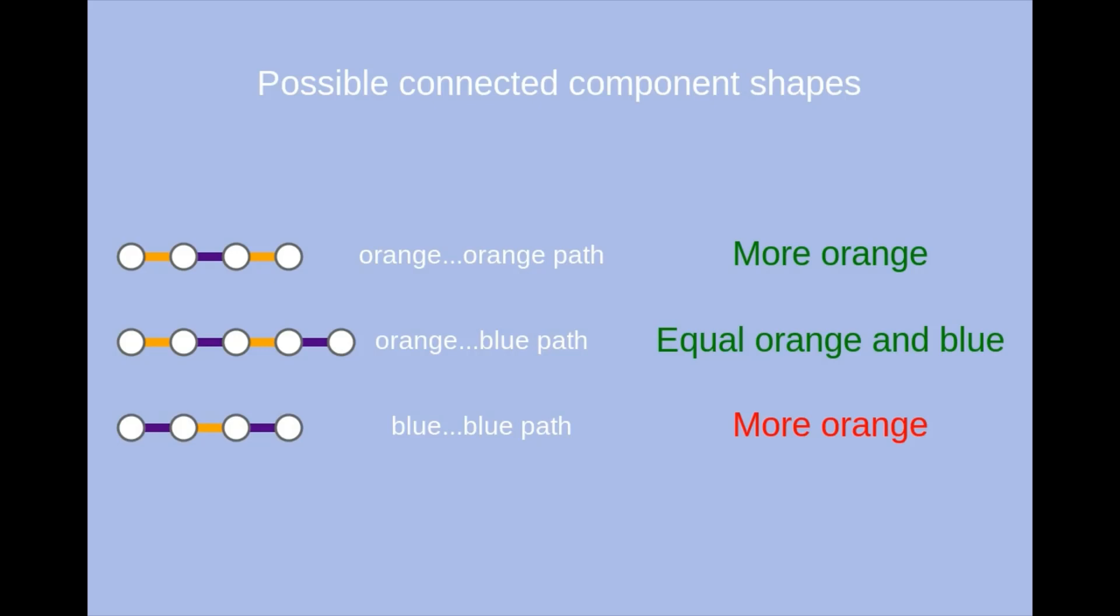And furthermore, this path is precisely an augmenting path in s, because all the blue edges must be white in s, since otherwise they would be stripy not blue in this diagram, and the endpoints are unmatched in s, because otherwise there would be an orange or stripy edge coming out of them in the combined graph.